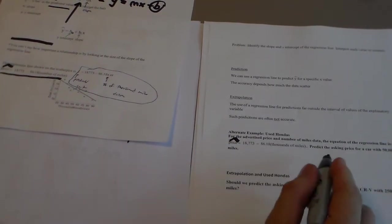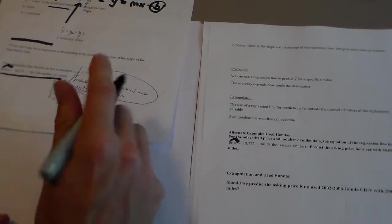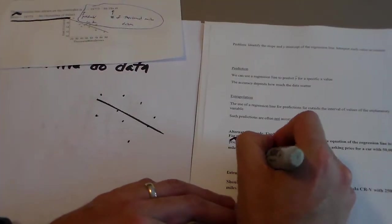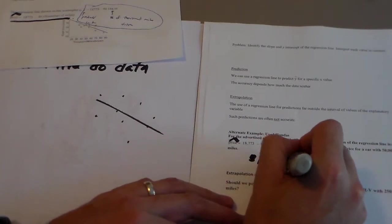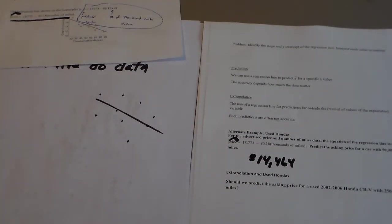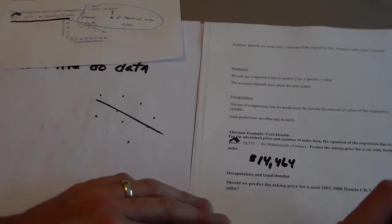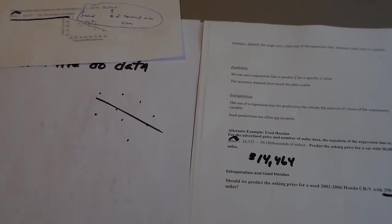So write that down. We say, what is it? We predict the asking price. We would say the asking price is $14,464. So the next one, it says they want to predict the asking price if it has 250,000 miles.